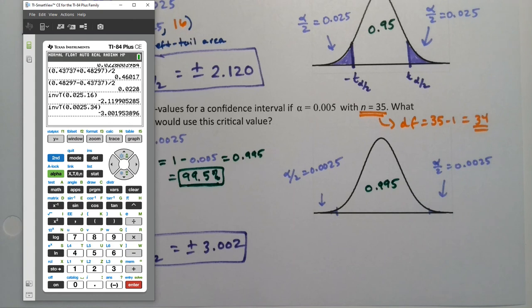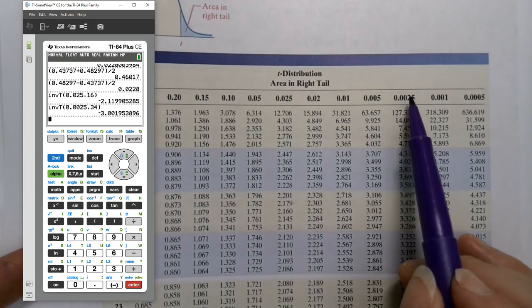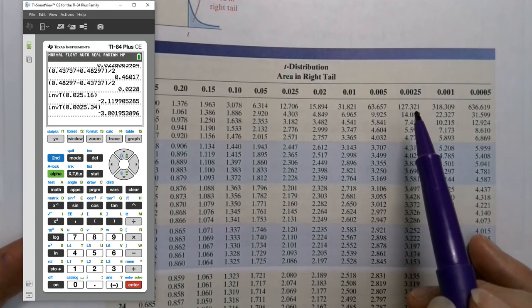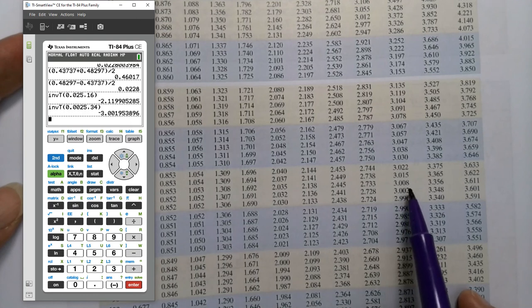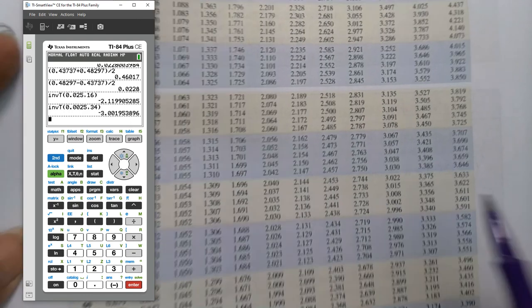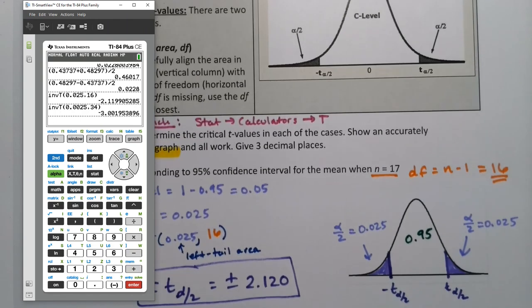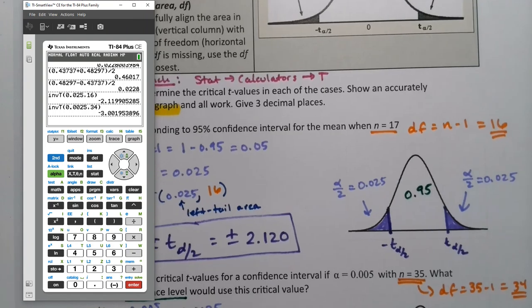And it comes up with the same answer as does the table because 0.0025 is right here. And then 34 row is right there. And it's 3.002. Now the table doesn't have all of them. So if you have one that the table won't do, then you'll have to use StatCrunch, or the calculator.